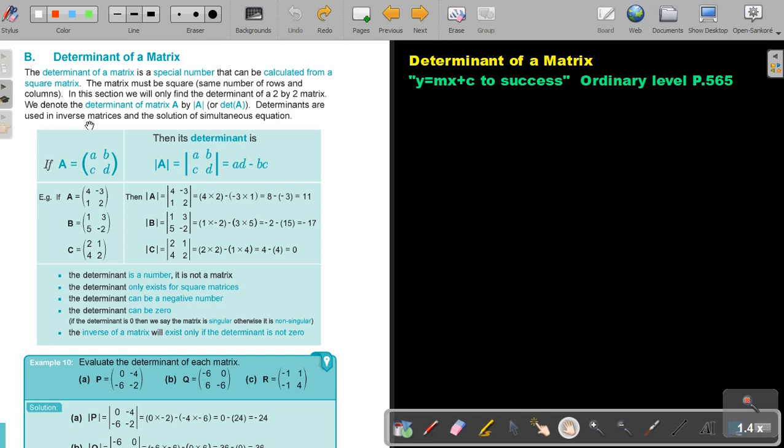Determinants are used in inverse matrices and the solutions of simultaneous equations. Let's just look. If A, if it's A, B, C and D, then the determinant will be there.